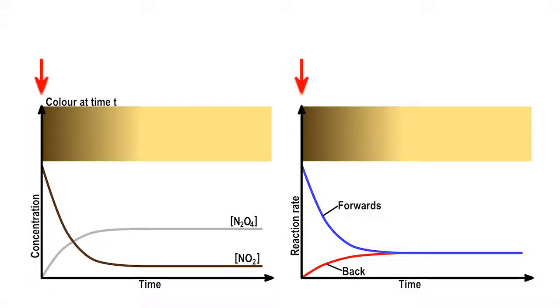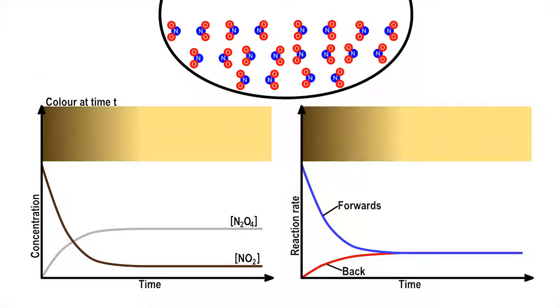At the start of the experiment, the flask contains molecules of just one gas, NO2, so the reaction can only move in a forwards direction.